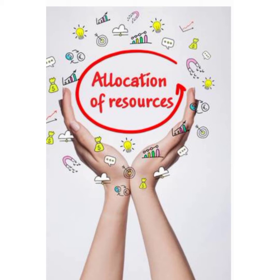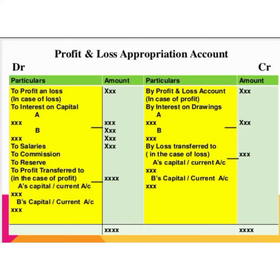Before distribution of profit among partners, certain adjustments are made. Now we are going to study the format of profit and loss appropriation account. While entering transactions in profit and loss appropriation account, first we want to transfer the amount of net profit on the credit side as 'By Profit and Loss Account'.